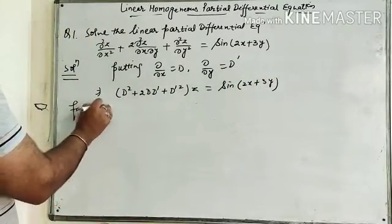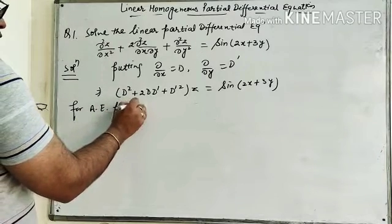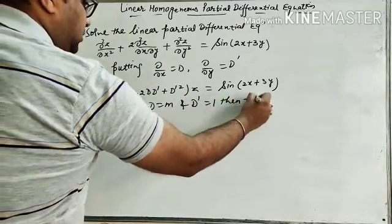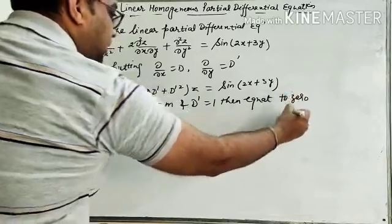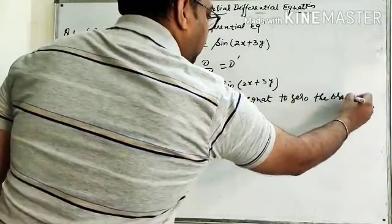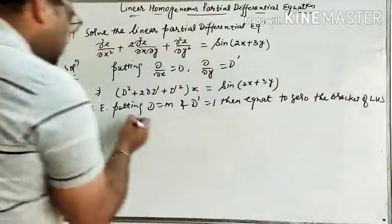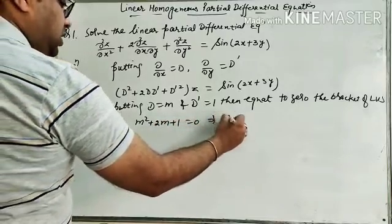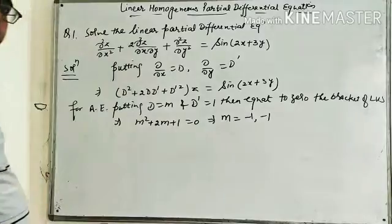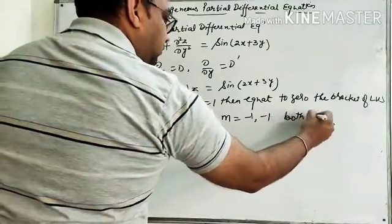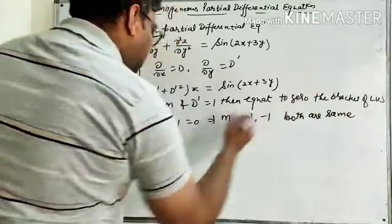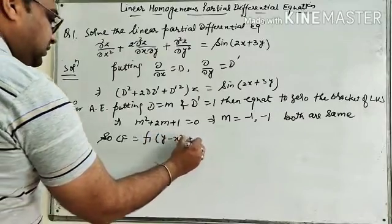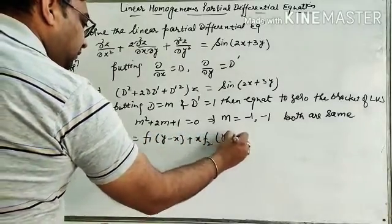Now we find the auxiliary equation by putting D = m and D' = 1, then equating the LHS bracket to 0. That gives m² + 2m + 1 = 0. Solving this, we get two equal roots: m = −1, −1. Since both roots are the same, CF = f₁(y − x) + x·f₂(y − x).